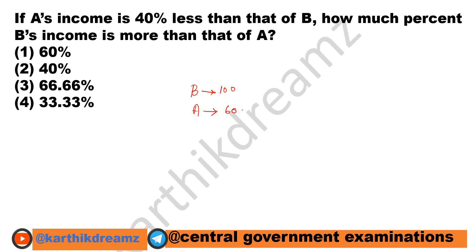Now we are going to compare B's income with respect to A. The difference between their incomes is Rs.40. We are comparing B's income with respect to A — how much more income is B getting compared to A.